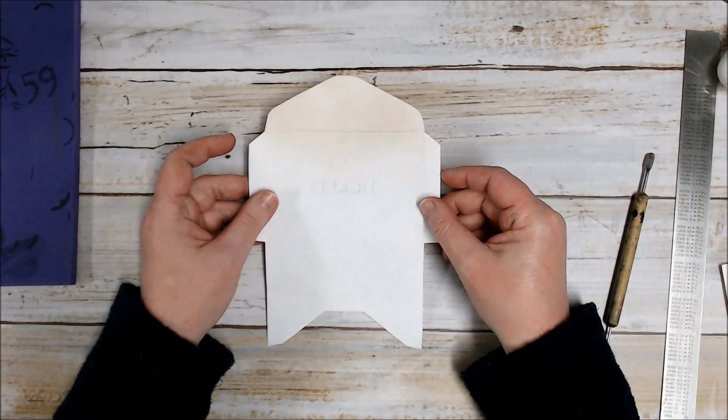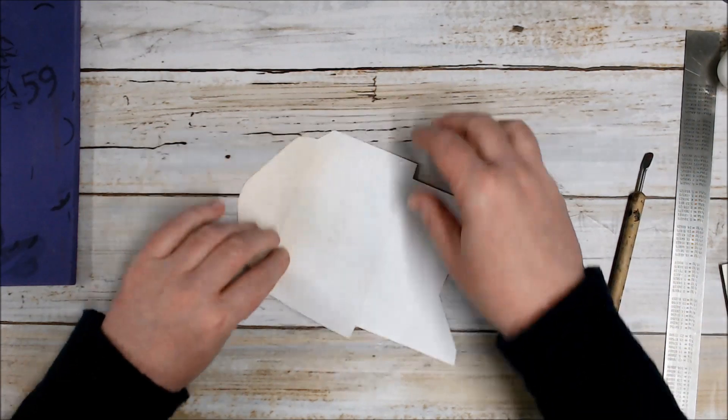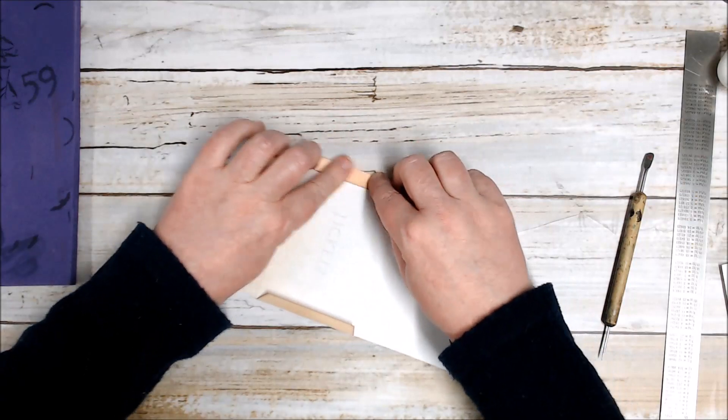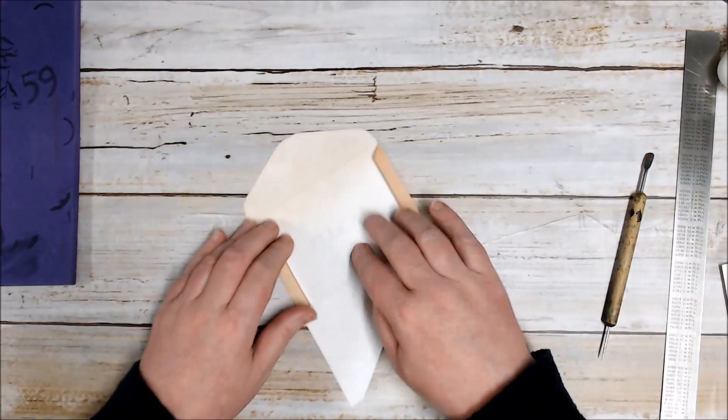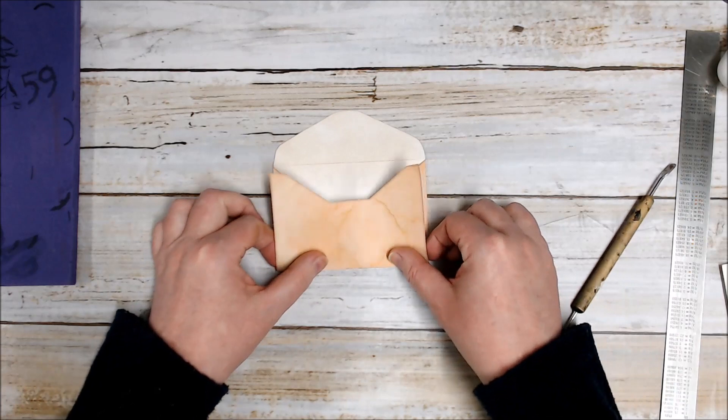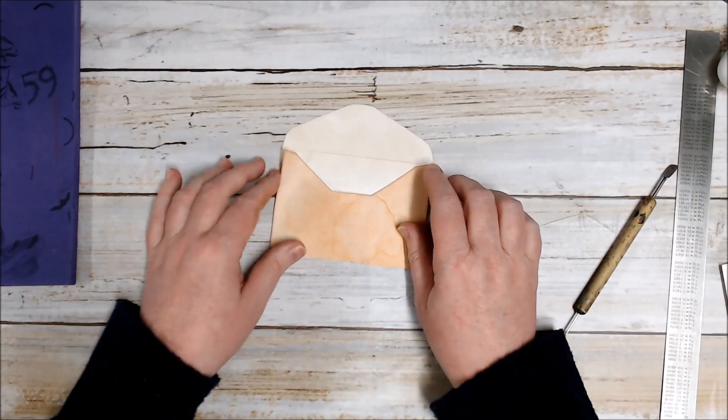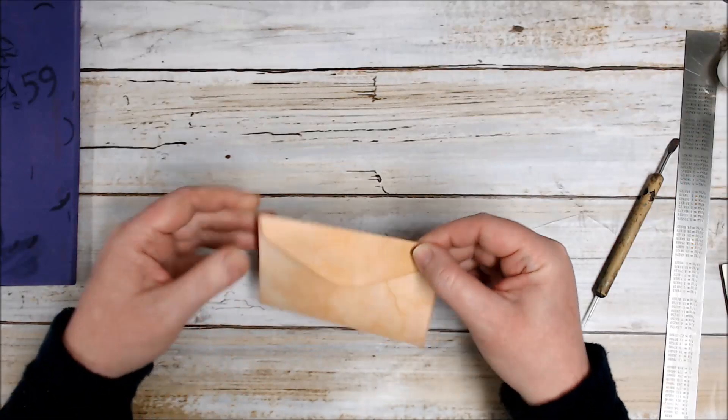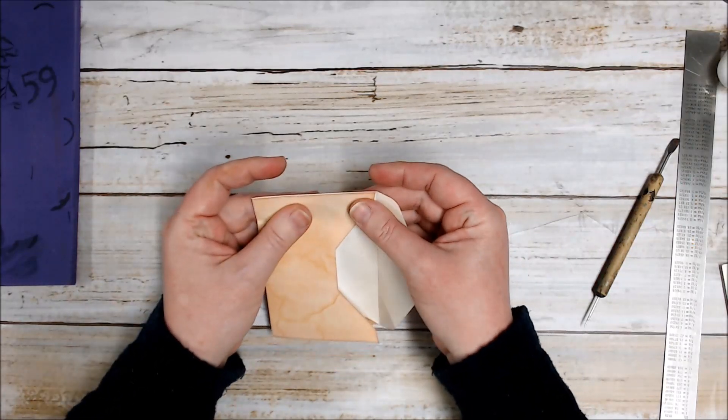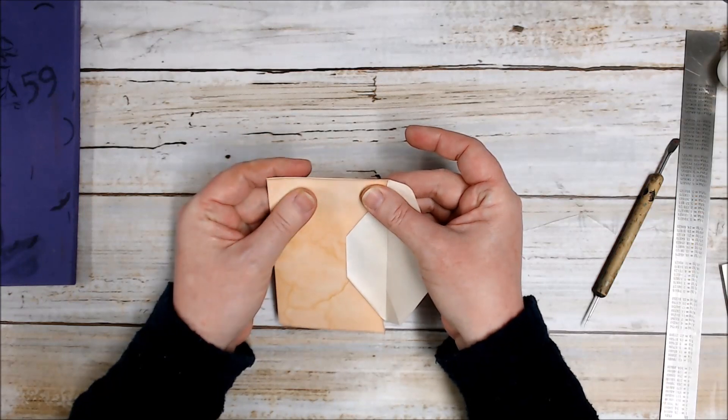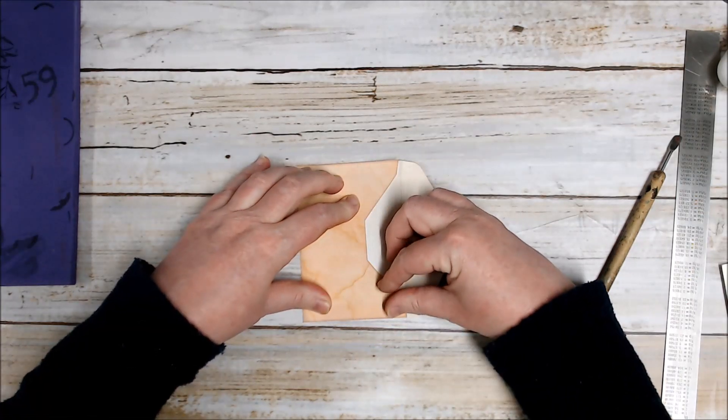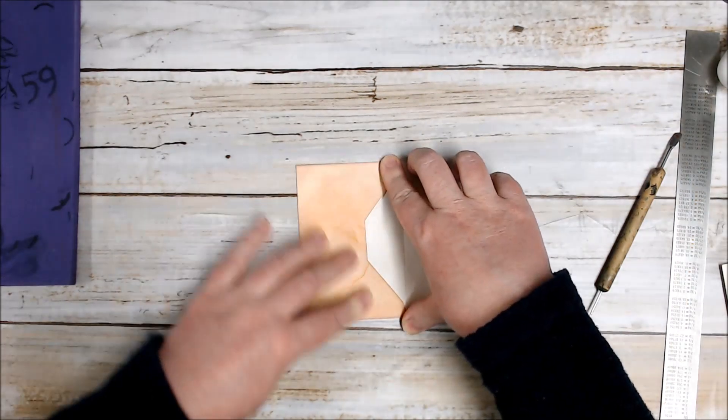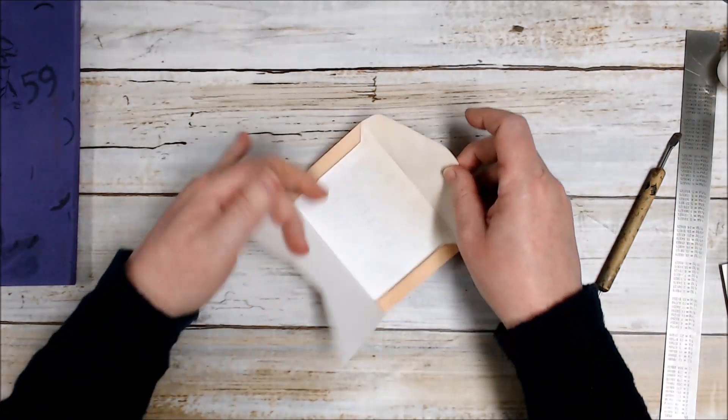Now I just need to fold my envelope along the score lines, folding them in towards the white area onto the back of the envelope. Once I've folded up my score lines I can double check and make sure that everything meets where it's supposed to before I glue everything down.